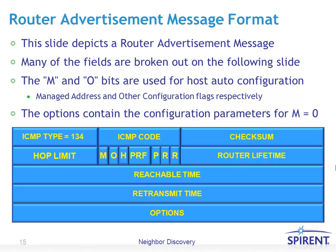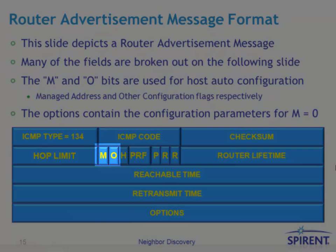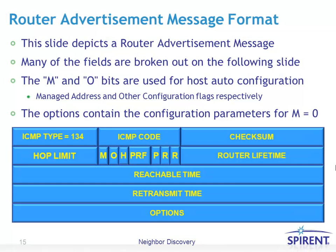Router advertisements play a big part of IPv6 protocol operation. Two very important bits in the Router Advertisement message are the M bit (managed) and the O bit (other configuration), used as flags for host auto configuration. If the M bit is set, it indicates stateful address configuration, meaning the host should use a DHCPv6 server rather than the router advertisement directly to configure its IPv6 address. If the M bit is not set, the host uses the router advertisement directly to get its prefix. The O flag indicates that even though the router advertisement is used to configure the IP address, a DHCPv6 server is still used for other configuration information such as DNS server addresses.